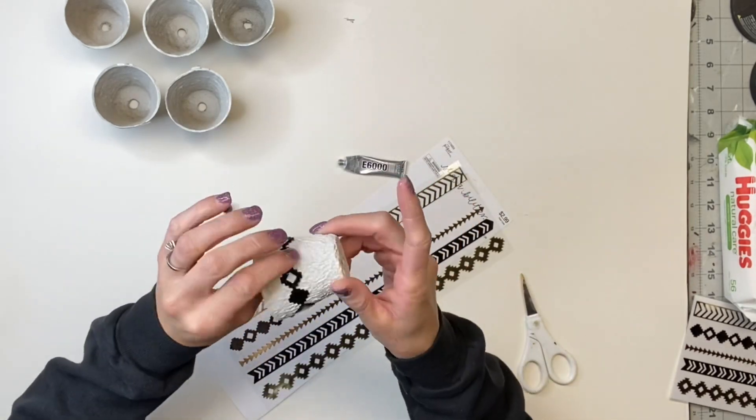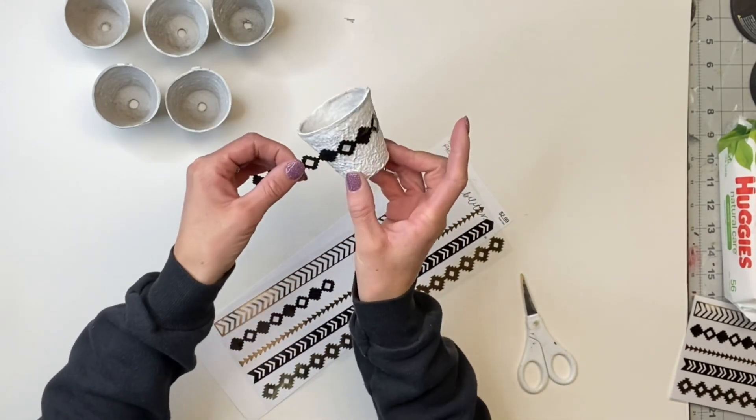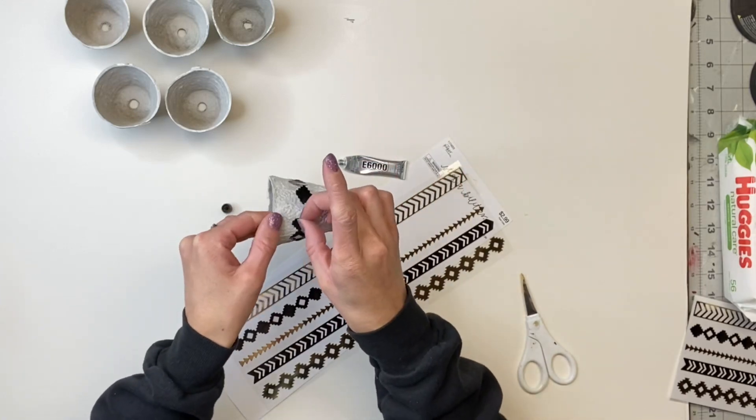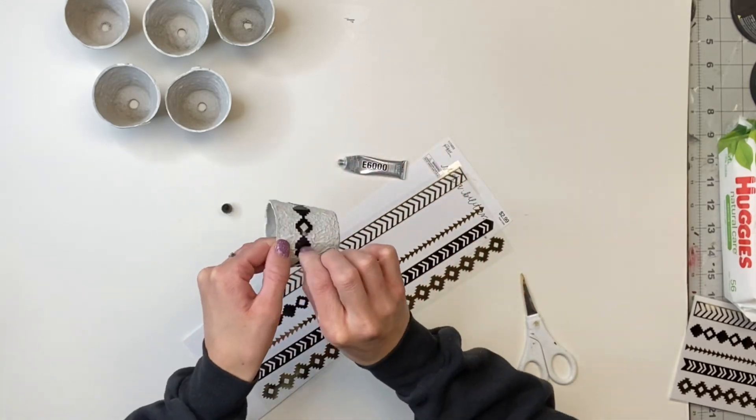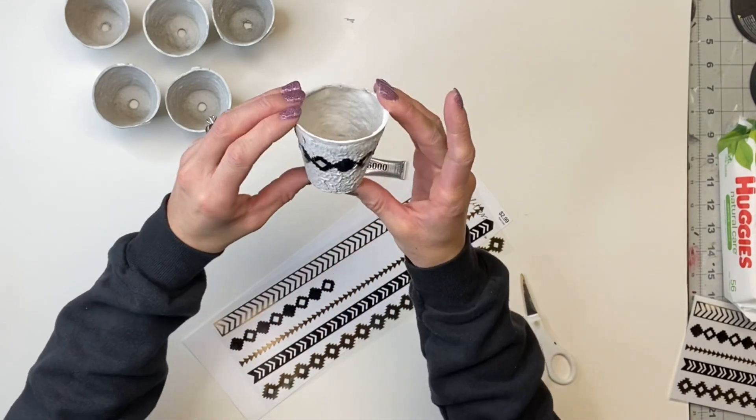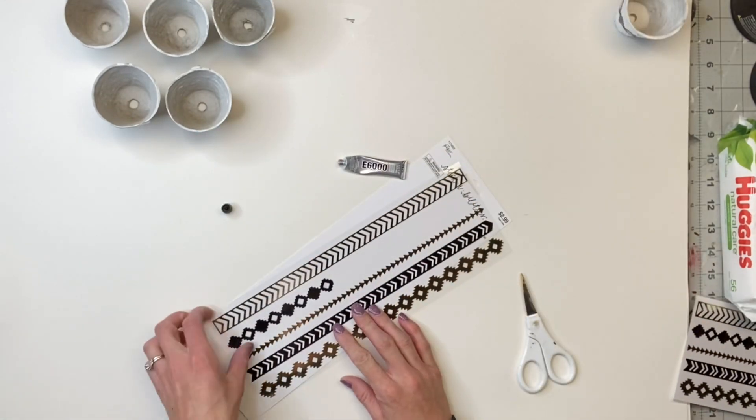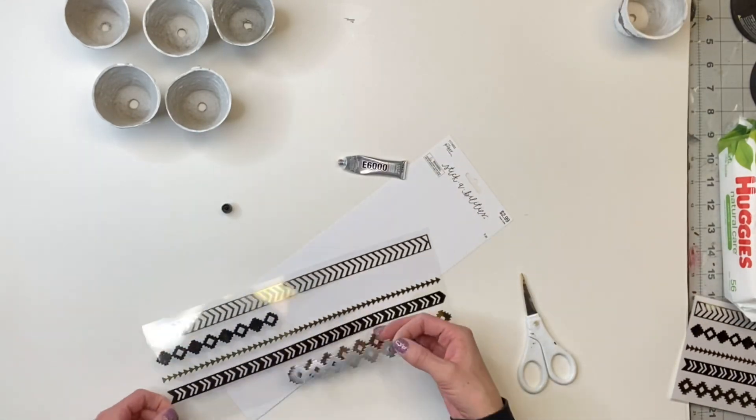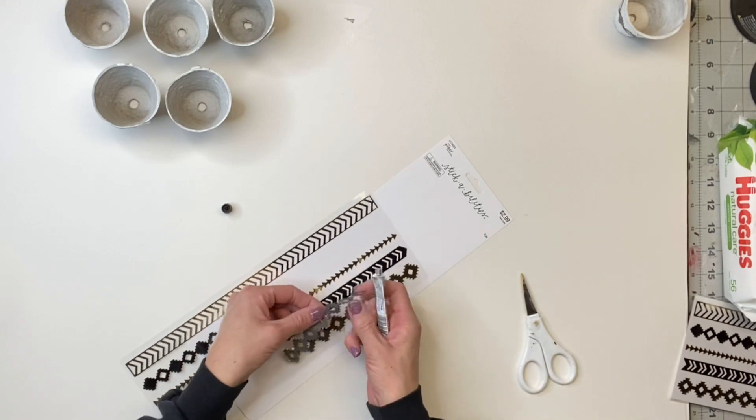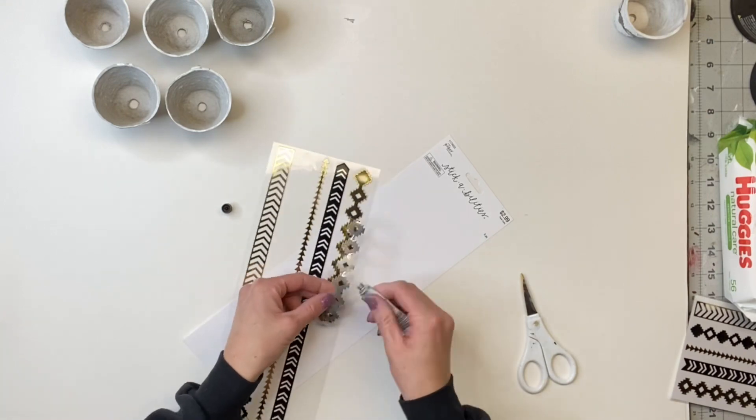The pot is a little bit of a rough surface, so it's not going to lay completely flat, but as long as it just wraps around and you can glue the ends of the stickers, then it should not fall off. And I repeated this step with all five of the pots.